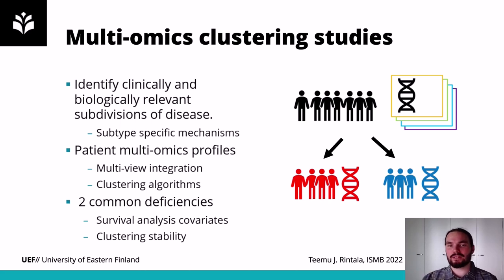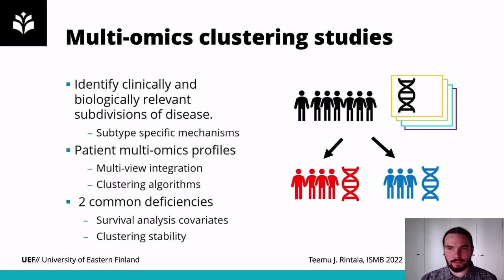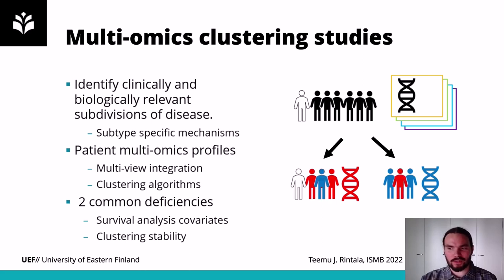There are many multi-omics integration and clustering algorithms that have been developed to find subtypes. In our research we found two main issues with previously done comparative studies: the lack of consideration for covariates like age and cancer stage, and the clustering stability — that is, the sensitivity of the algorithm to small differences in input data composition. For example, just removing some patients, we would expect the clustering result to remain the same, but often that is not the case.